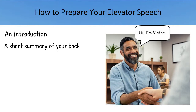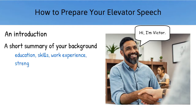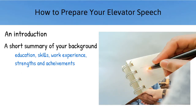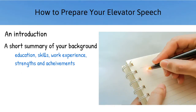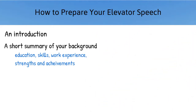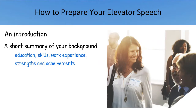Then, give a short summary of your background. Include key information like your education, skills, work experience, or strengths and achievements. Write down the things you want to say and then reduce them to only the most relevant information. What you say will depend on who you're talking to. If you're talking to a prospective employer, you may include technical skills or job accomplishments.